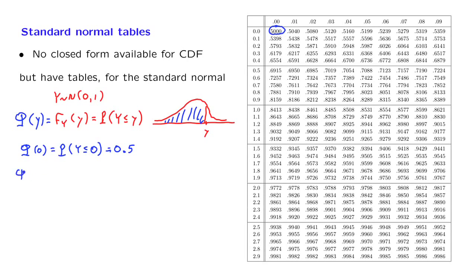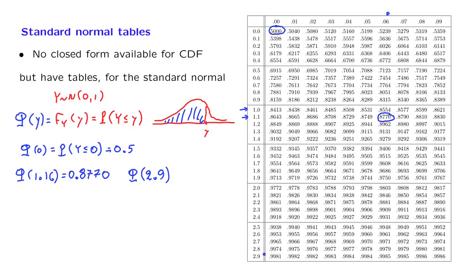Let us look up the probability that our standard normal takes a value less than 1.16. How do we find this information? 1 is here, and 1.1 is here, and then we have a 6 in the next decimal place, which leads us to this entry. And so this value is 0.8770. Similarly, we can calculate the probability that the normal is less than 2.9. 2.9 is here. We do not have another decimal digit, so we're looking at this column, and we obtain the value 0.9981.